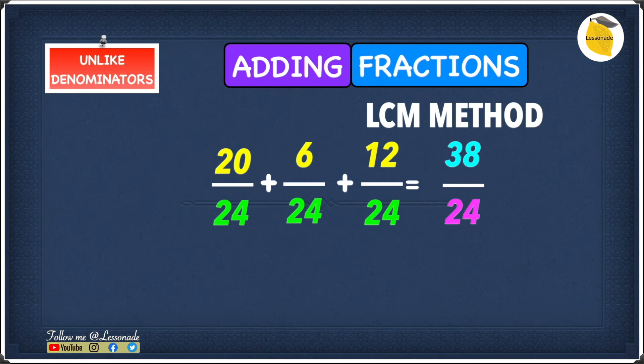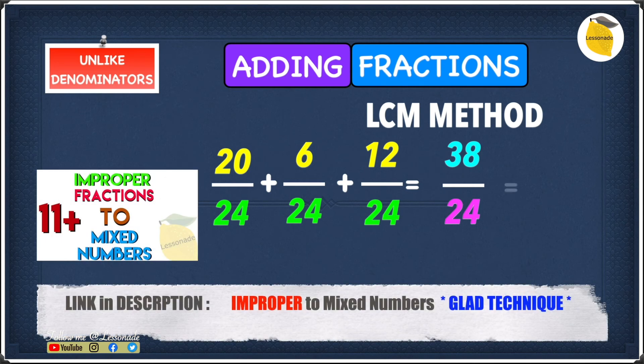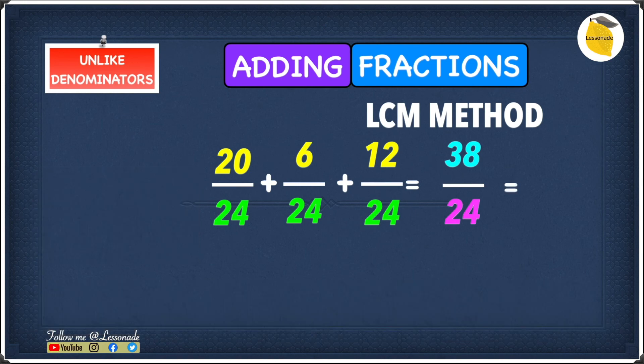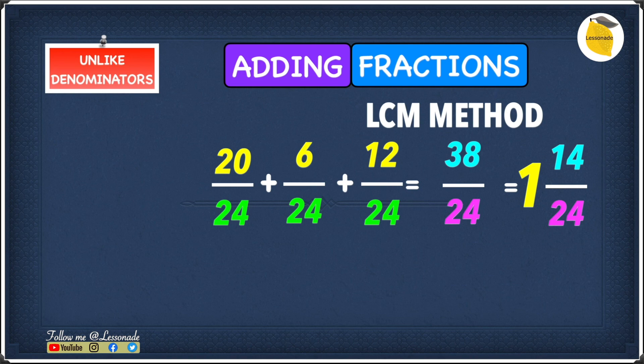But if you notice the answer we have right now you could see that we have 38 over 24 and we know that 38 over 24 is an improper fraction. Because it's an improper fraction we can turn it into a mixed number. If you guys want to know more about turning improper fractions into mixed number I've got a video on that. The link's in the description below so go check that out. So 38 over 24 as a mixed number is 1 and 14 over 24. So this means our answer to this question is 1 and 14 over 24.